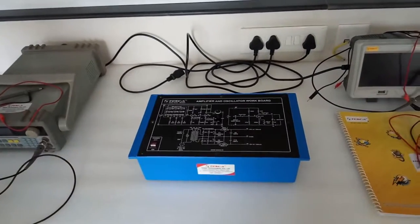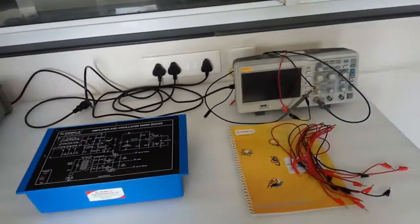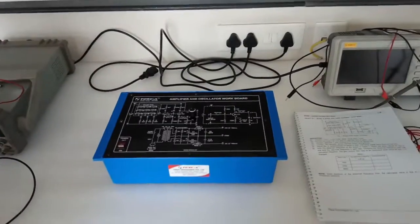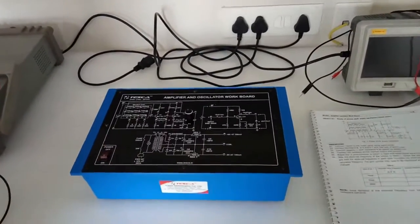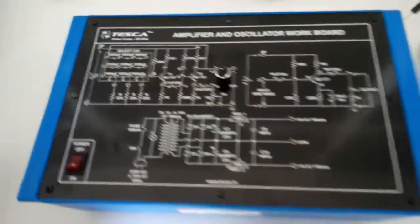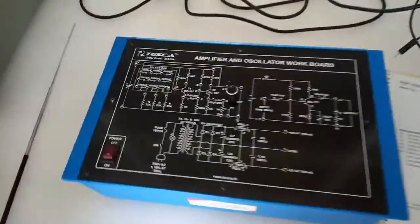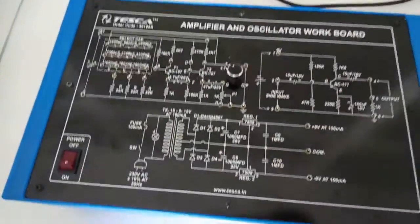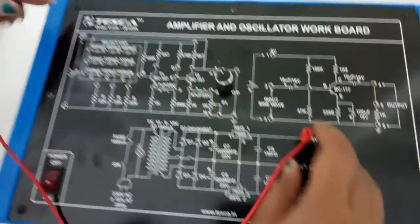To perform these experiments, we will need a function generator and the DSO. The first objective is to study the phase shift audio oscillator. For this, we are going to use this part here.